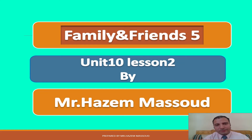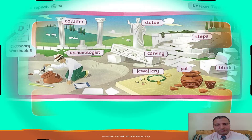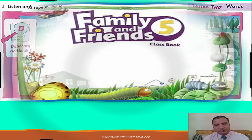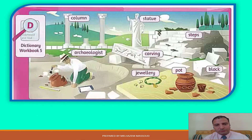Assalamualaikum warahmatullahi wabarakatuh. My dear students, family and friends. Family and Friends 5, Unit 10, Lesson 2. Listen and repeat. In this part of the lesson we will know some new words. Now listen. Listening 76, listen and repeat.